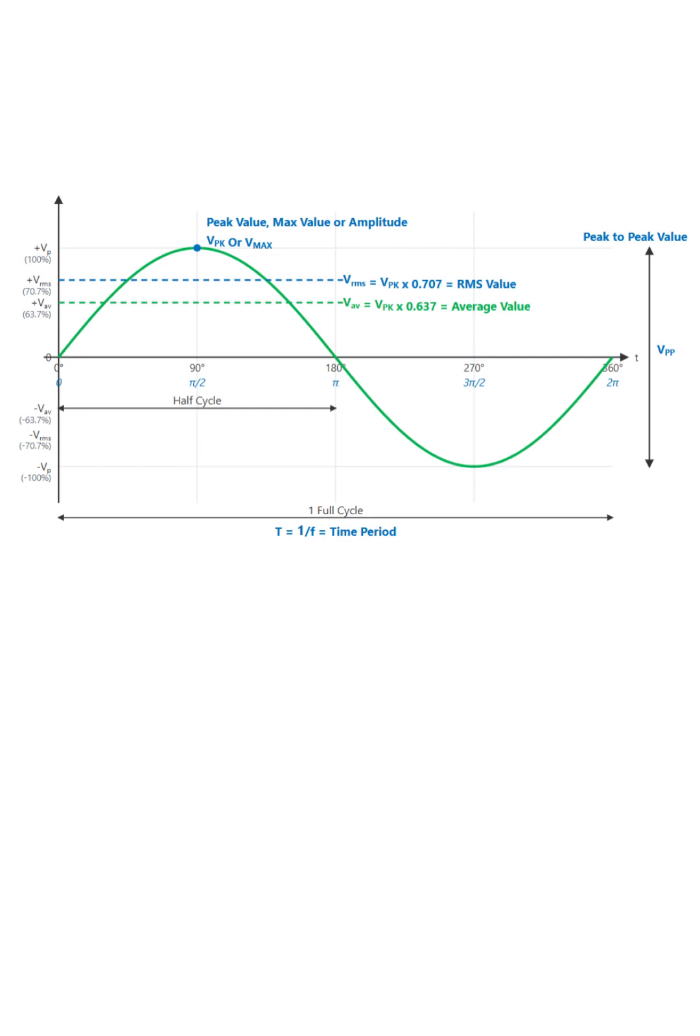Let's start by looking at the overall shape. This green line represents a voltage that is constantly changing over time. It starts at zero, rises to a maximum positive value, falls back through zero to a maximum negative value, and then returns to zero. This entire journey is called one full cycle.